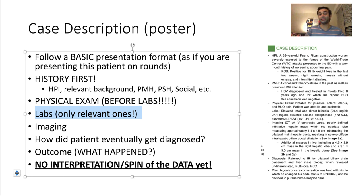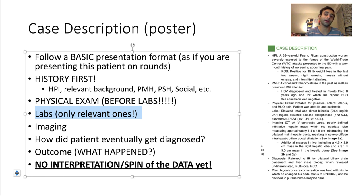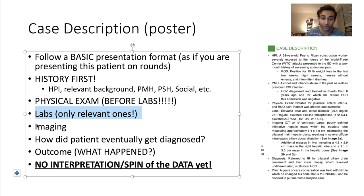After the history, describe the physical exam. One of the biggest mistakes I see is people jumping straight to labs or imaging, because that's usually where the diagnosis is. Never do that. Start with history, then physical exam and vital signs — but include only the parts that are relevant. Include pertinent positives and pertinent negatives. For hepatocellular carcinoma, if the patient didn't have scleral icterus, jaundice, or ascites, those are pertinent negatives worth noting.